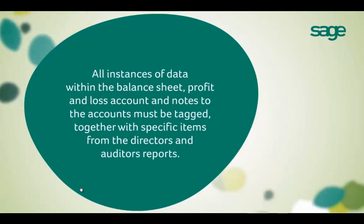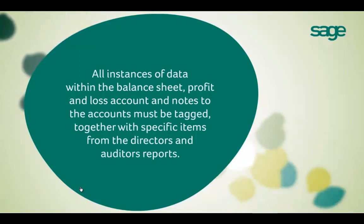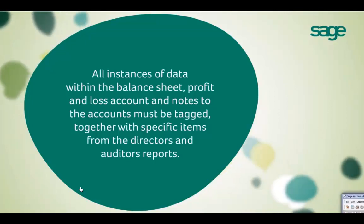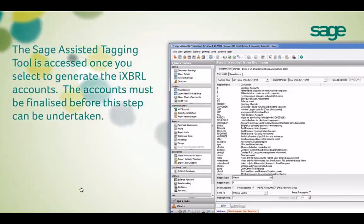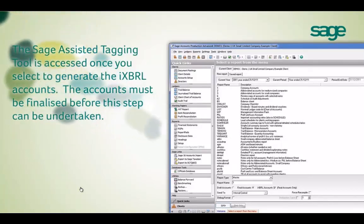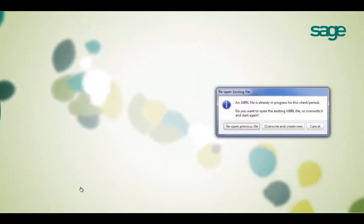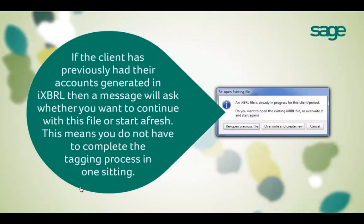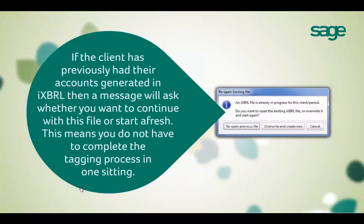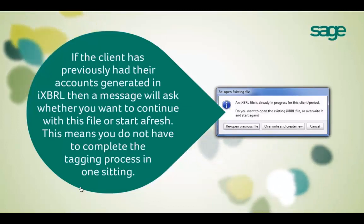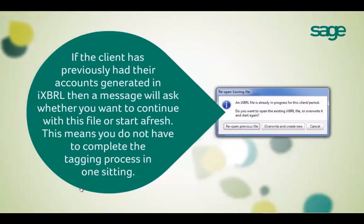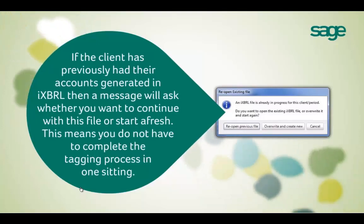As of April 2013, limited companies need to generate their accounts using iXBRL minimum tagging. We want to make complying with these rules as simple as possible, so we have developed the Sage Assisted Tagging tool, which is included as standard in our entire accounts production range. This allows you to confirm or assign tags with an easy-to-use interface. Full iXBRL information in the financial statements must be tagged in the background of the P&L, balance sheet and notes, along with specific areas from the Directors', Auditors' or Accountants' report. The software is clever enough that you can't tag a description with a monetary tag and vice versa.